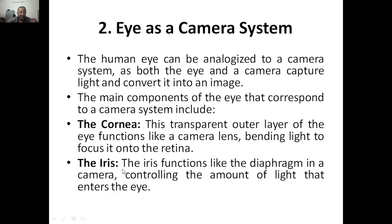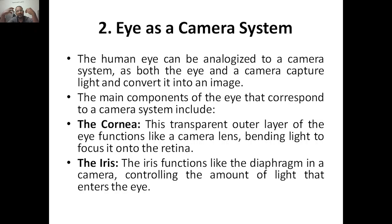The next part is iris. Iris functions like a diaphragm in the camera. In the camera, after focusing, the light goes to the diaphragm. The iris will act as a diaphragm, controlling the amount of light that enters the eye. The iris is the one that decides how much light should be entering into your eye. This function is done by the diaphragm in a camera. So iris is the diaphragm in camera.